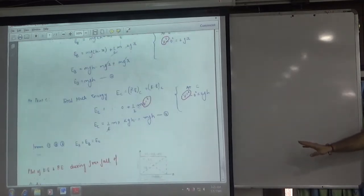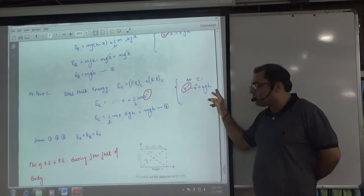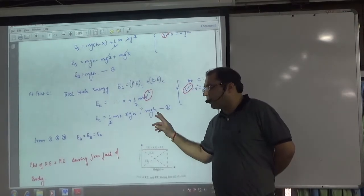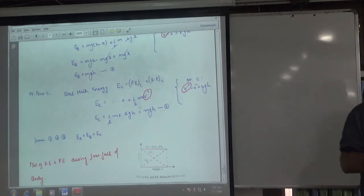We are calculating v'. So v' square minus 0 square is 2gh. So v' value will be equal to square root 2gh. So total energy at point A, B and C is constant.